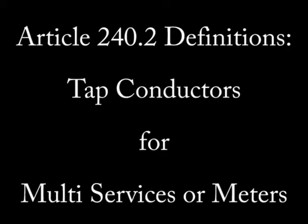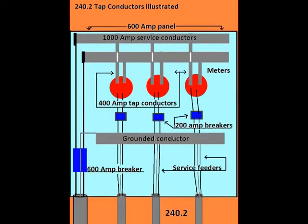Article 240.2 definitions: tap conductors. We need a diagram for this. In a multimeter service, there are taps that feed each meter. These taps are exempt from the standard rating method for conductors. As you can see, the tap conductors are clearly rated at a lower amperage than the main service panel. But beyond the meter, they are indirectly protected by a 200 amp breaker that will feed a smaller service further down the line.